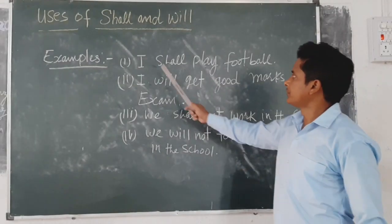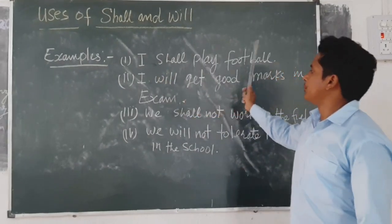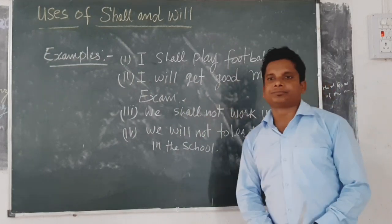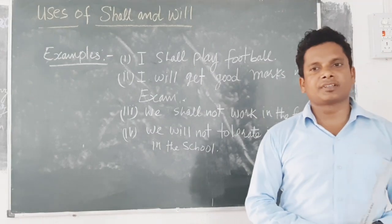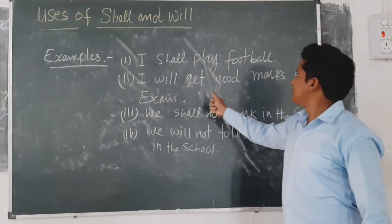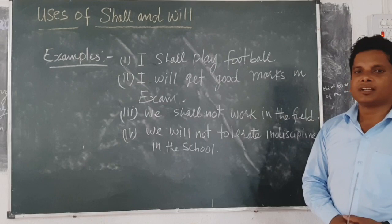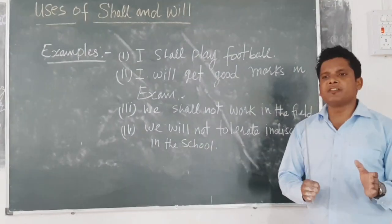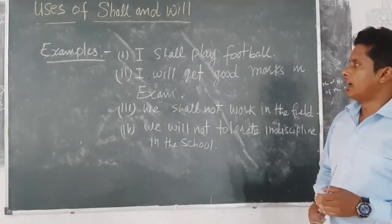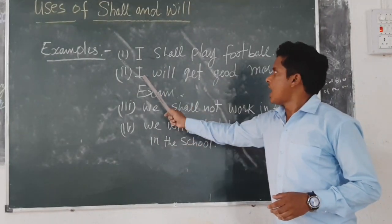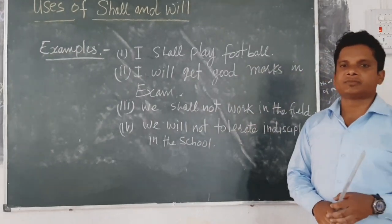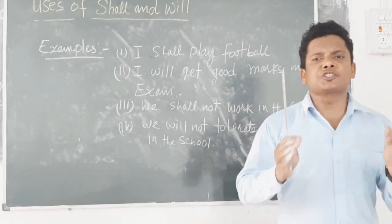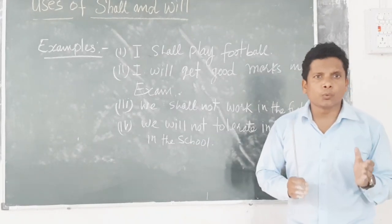Some examples are: I shall play the ball. I will get good marks in exam. Let us compare both sentences. The first sentence — I shall play the ball — there is no emotion. It is only a simple future arrangement. And the second sentence — I will get good marks in exam — we are showing strong determination. This is the strong future, and we are using will.